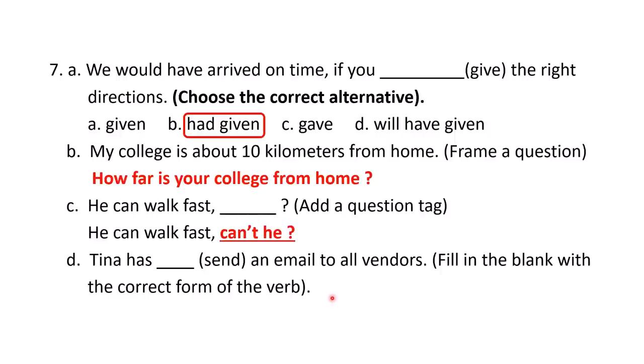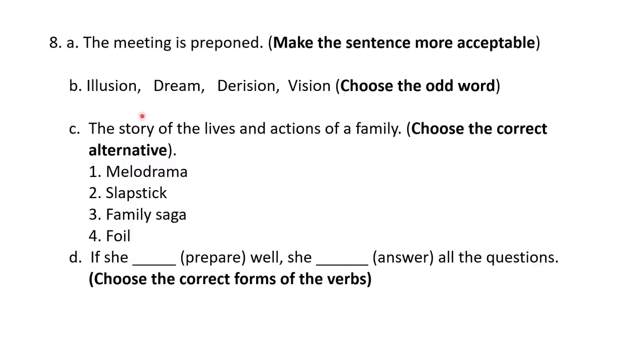D: 'Tina has ___ an email to all vendors.' Fill in the blank with the correct form of the verb. Tina has sent — this is the present perfect tense, 'has sent.' That is the last question of Section A.